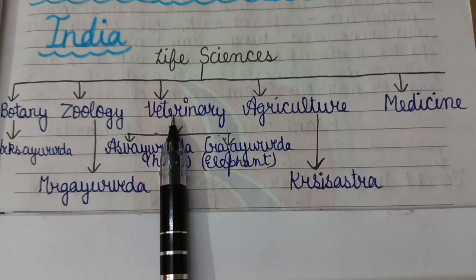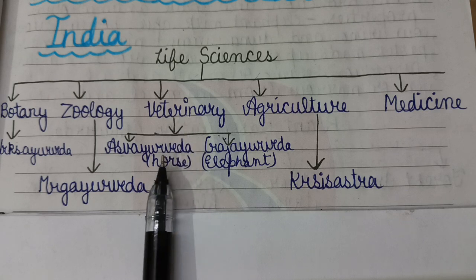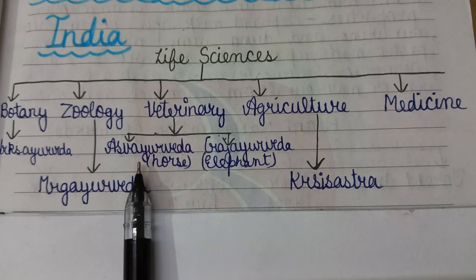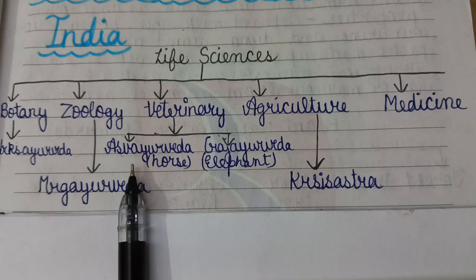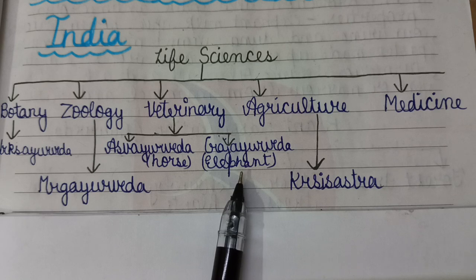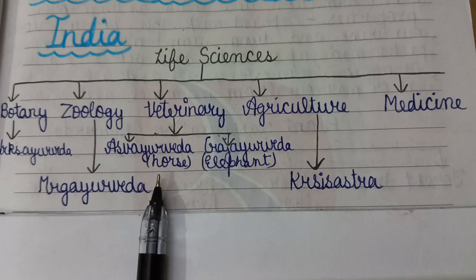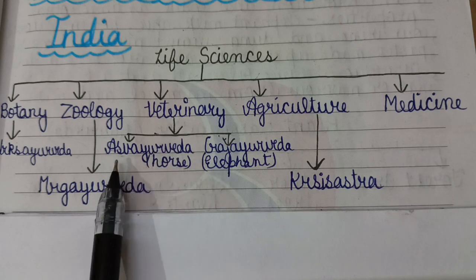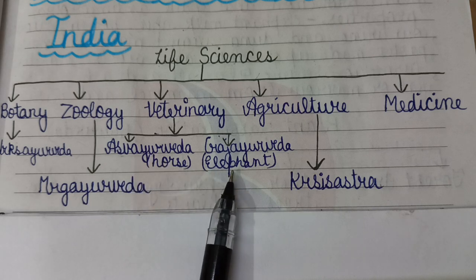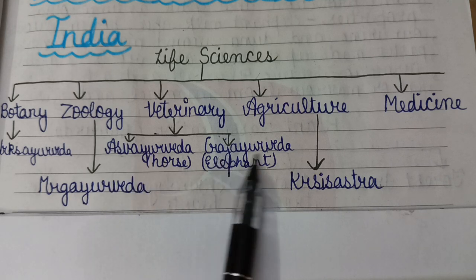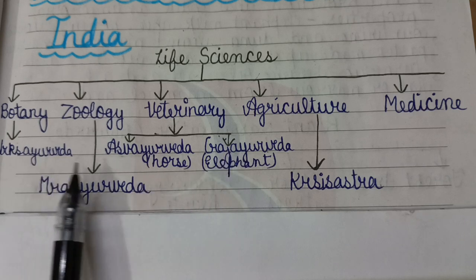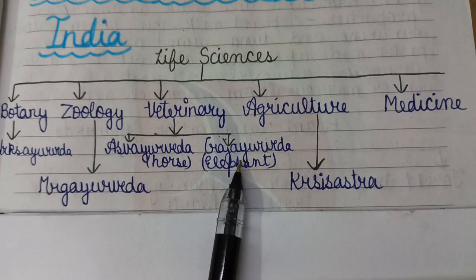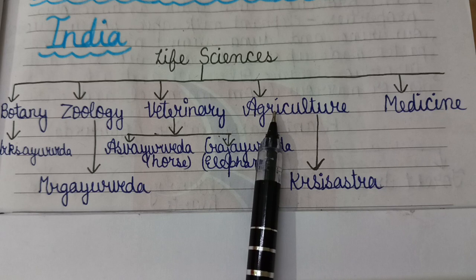Next is Veterinary, which is related to two particular animals: Horse and Elephant, because these two animals had great importance in Ancient India. For Horse, it is known as Ashwa Ayurveda, and for Elephant, it is known as Gaj Ayurveda. Both are important.